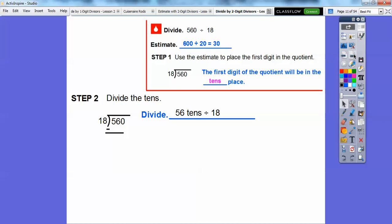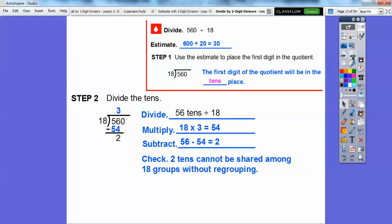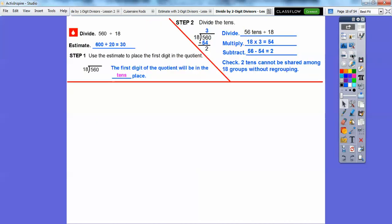Let's go ahead and divide. 56 tens divided by 18, we'll do that 3 times. 3 times 18 is going to get us 54. Then we're going to subtract those two. When we subtract 56 minus 54, that's going to get us 2 tens. Then 2 tens cannot be shared among the 18 groups again. So we're going to have to regroup these ones and slide them down. There's step 1, there's step 2.